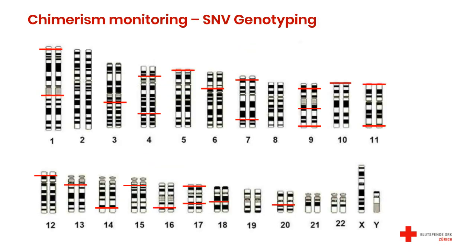We validated 24 single nucleotide variant genotyping TaqMan assays. We selected them for high heterozygosity frequency and made sure they are distributed on different chromosomes on the human genome. We also selected them because they can all be analyzed with the same fluorescence compensation matrix.